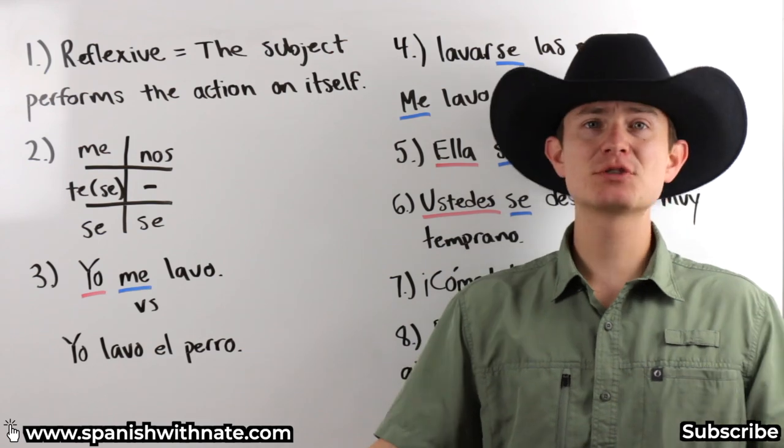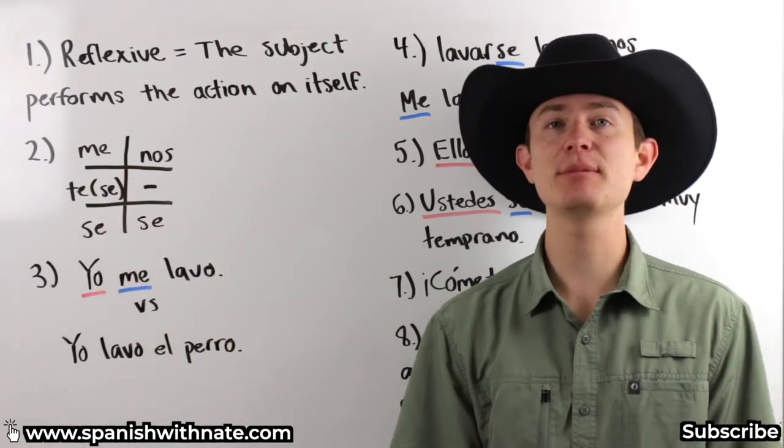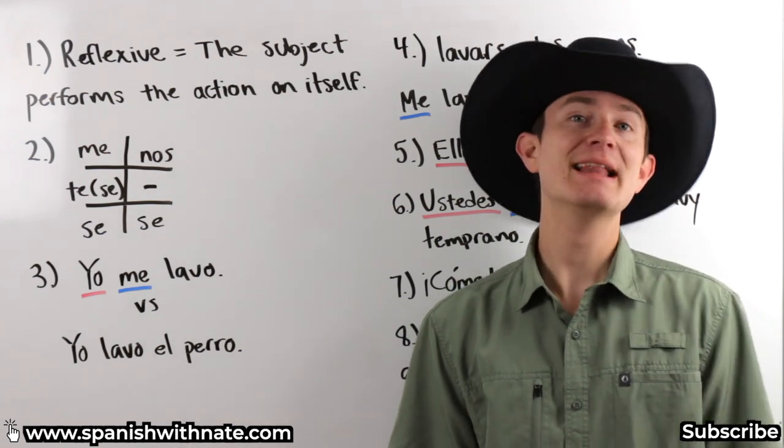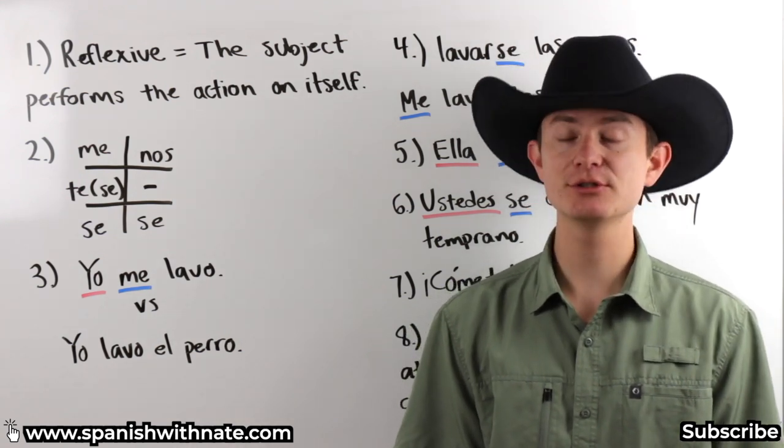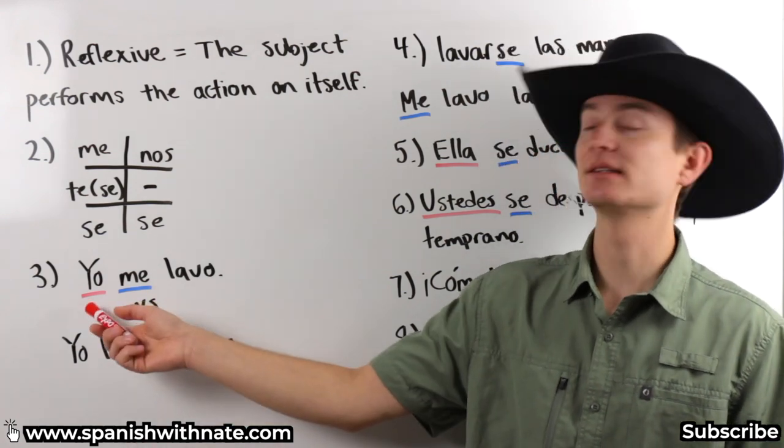Now, this is quite confusing because if I hear se for all these different people, how am I supposed to know which is which? Okay, the answer is based off of context clues. And we also might have the subject stated in the sentence.